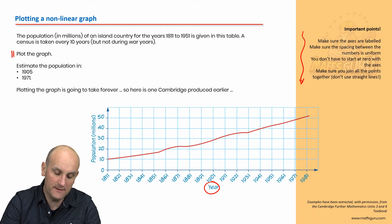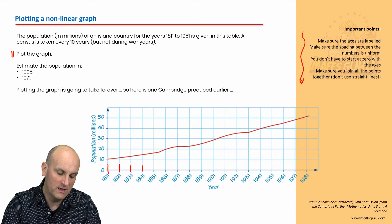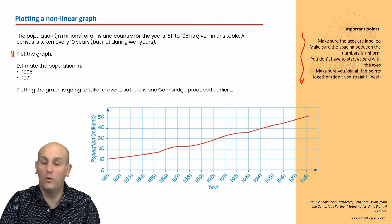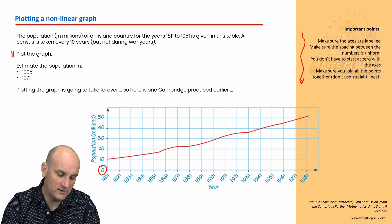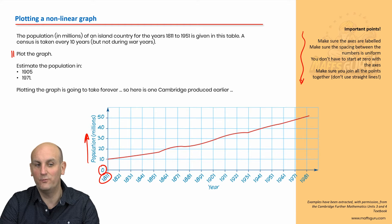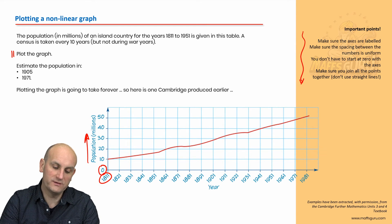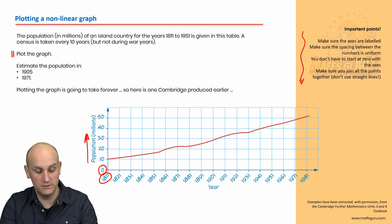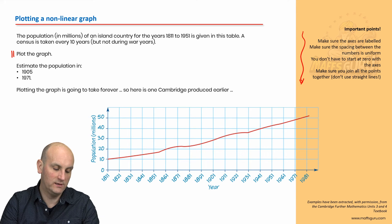Make sure the axes are labeled — we've got population in millions. Make sure the spacing between the numbers is uniform: we have a gap for every 10 years. Don't have to start with zero — we've started at zero for population in millions but started with 1811 on the year axis. Make sure you join all the dots together and don't use straight lines, as I just talked about.